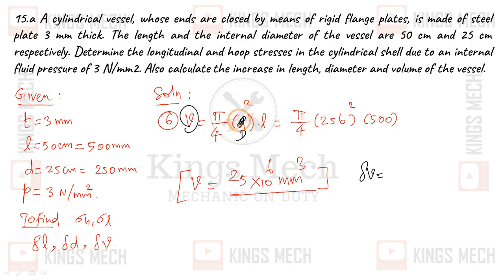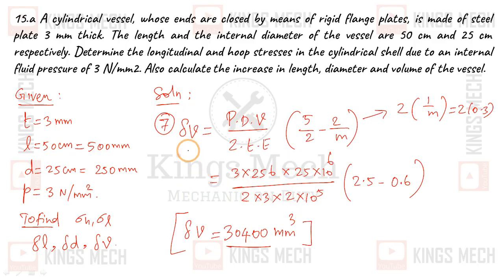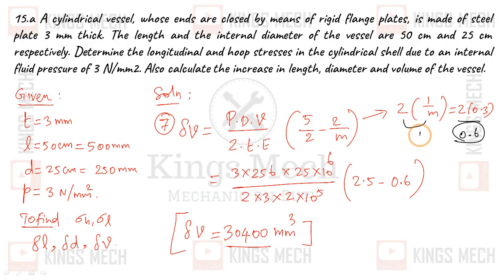Using capital D = 256, and the volume formula: δV = (P × D² × L) / (2tE) × (5/2 − 2/m). Here 2/m = 2 × 0.3 = 0.6. So the bracket becomes 5/2 − 0.6 = 2.5 − 0.6 = 1.9. The initial volume V = (π/4) × D² × L = (π/4) × 256² × 500, giving approximately 25 × 10⁶ mm³.